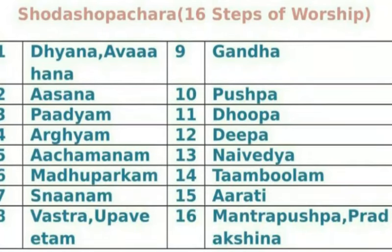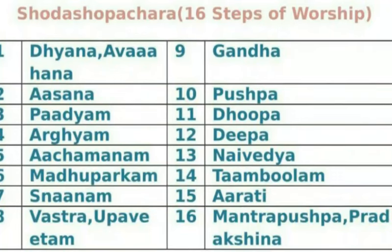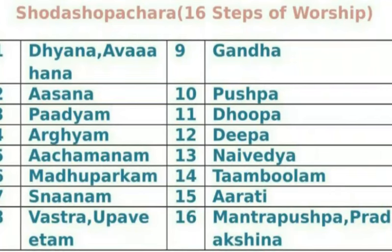We have to offer a seat for the God to sit. Number 3 is Padhyam, which means we have to wash the legs of the God. Number 4 is Argyam, which means we have to wash the hands of the God. Number 5 is Achamanam — that means we have to drink 3 spoons of water for clearness of the throat, so that we can pray to the God.